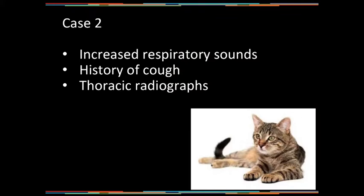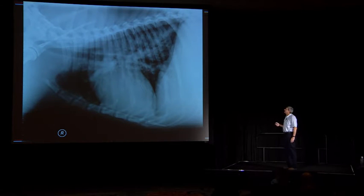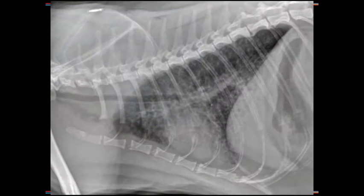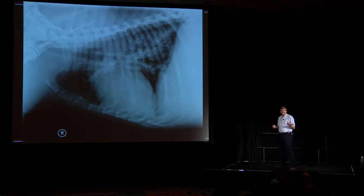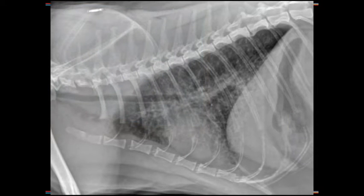Case number two: normal physical exam, history of a cough, and we took thoracic radiographs. In this case, we're starting to see much more enlargement of the vessels, but we're also starting to get a bronchial pattern — thickened airways right in here — and whiteness in between, which is an unstructured interstitial pulmonary pattern. So we're getting not only a vascular pattern, but a bronchial pattern and an unstructured interstitial pattern. Heartworms can cause multiple patterns related to the same disease.